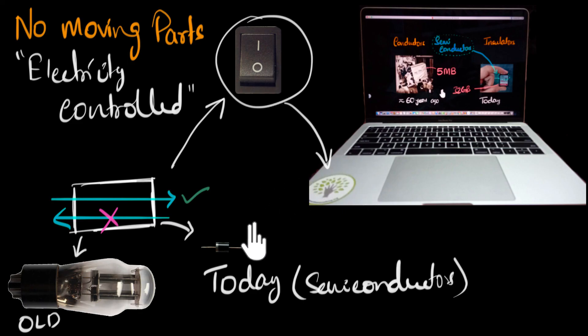And so in the future videos, we're going to focus and we're going to learn exactly how, by exploiting the properties of semiconductors, we can build devices like this. And then eventually we're going to learn how using these devices, we're going to build switches which have absolutely no moving parts, which are only electricity controlled.